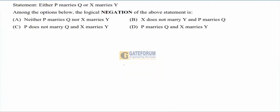Statement: 'Either P marries Q or X marries Y.' The logical negation means saying the opposite — P will not marry Q and X will not marry Y — which in proper English is: 'Neither P marries Q nor X marries Y.' Option A is the correct option; it carries the negation of the statement in totality.